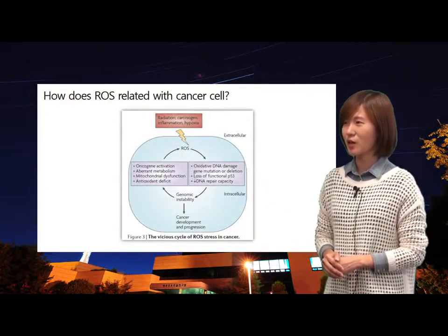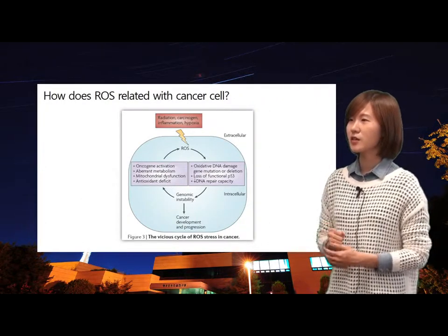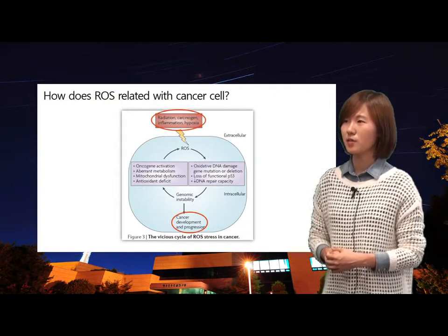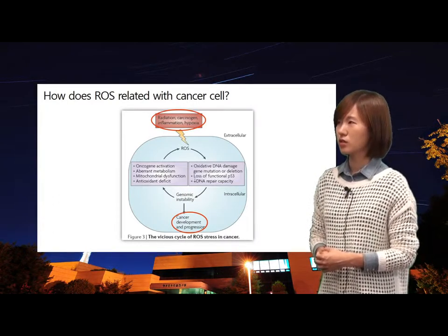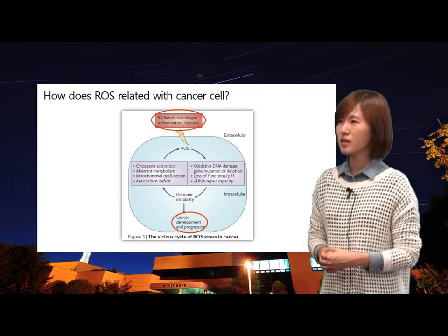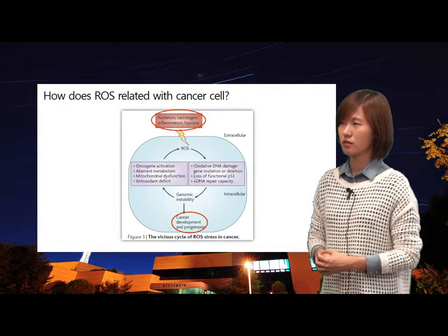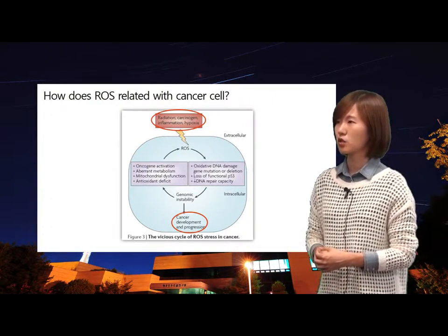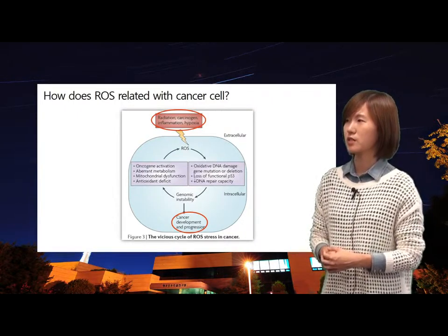How does ROS relate to cancer in our body? First, ROS can be generated by radiation, carcinogens, inflammation, and hypoxia. Then ROS causes oxidative DNA damage, which increases genomic instability, transforming normal cells into cancer cells. After that, oncogene activation and mitochondrial dysfunction can further generate ROS, so this becomes a vicious cycle.